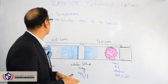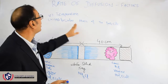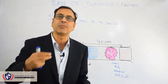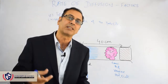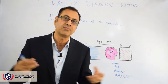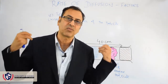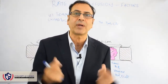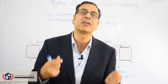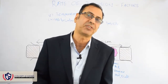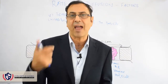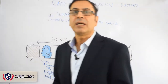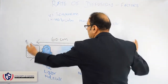For the second factor — the molecular mass of the particle. The lighter particles can move faster. When lighter particles move faster, they can mix faster, make more collisions, and mix up quickly, showing a higher rate of diffusion compared to heavier molecules.